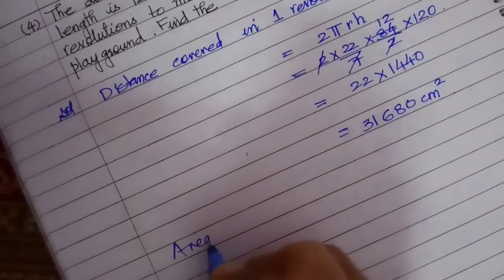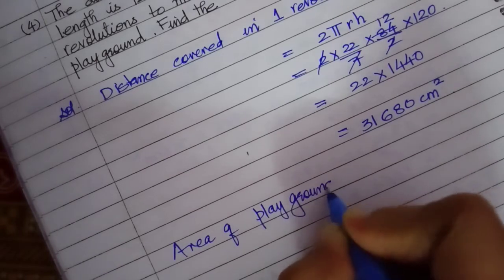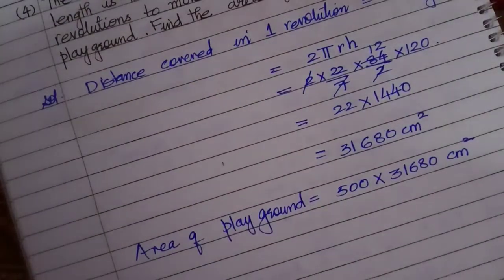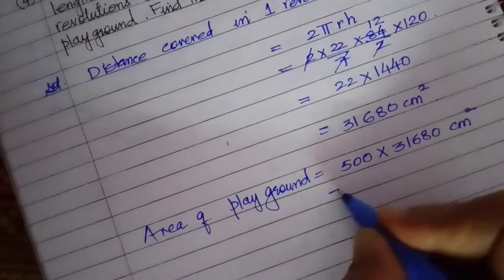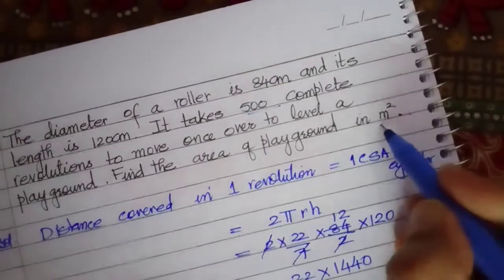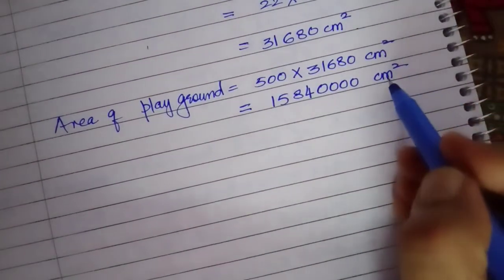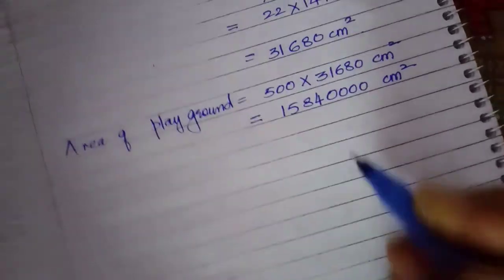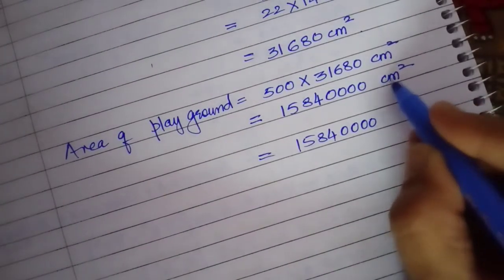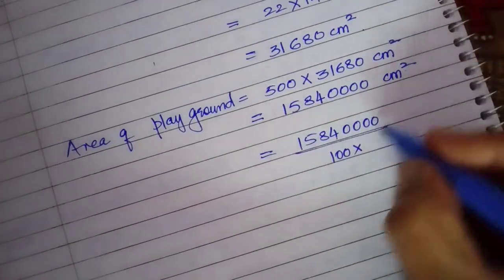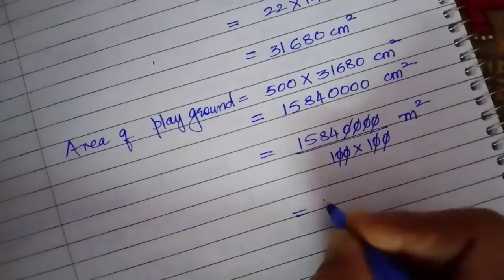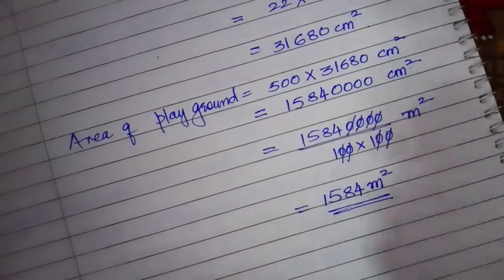Area of playground is equal to 500 into 31680 cm square. I have to multiply this with 500. I get it as 15840000 cm square. But in question they said, find the area in meter square. That means we have to change cm square unit to meters. We know that if I want to change this into meters, divide by 100 for one cm, divide by 100 for the other as well and it changes to meter square. So all the four zeros get cancelled and it is 1584 meters square. This is the area of the playground.